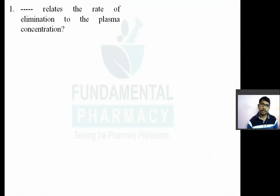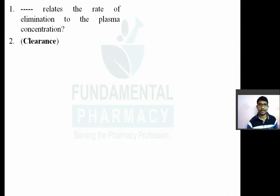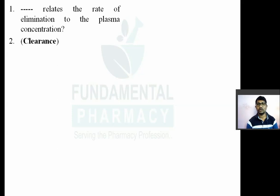First question: what relates the rate of elimination to the plasma concentration? The answer is clearance. Depending upon the organ for elimination, clearance relates the rate of elimination to the plasma concentration. Clearance is the total amount of drug that is being removed or cleared from your body per unit time. Depending upon the organ for elimination, there are different organs like kidney, lungs, liver, gallbladder, and intestine.